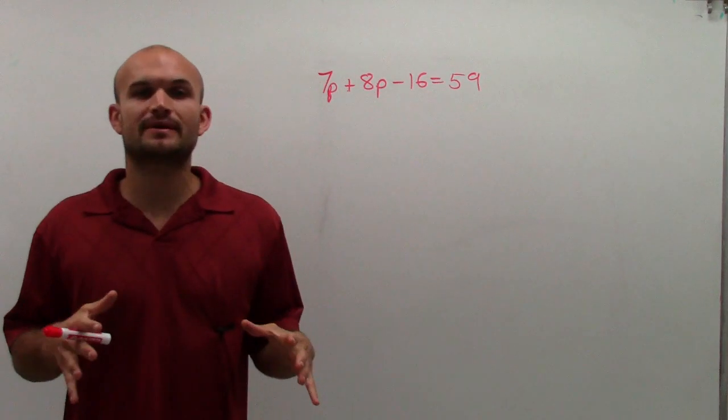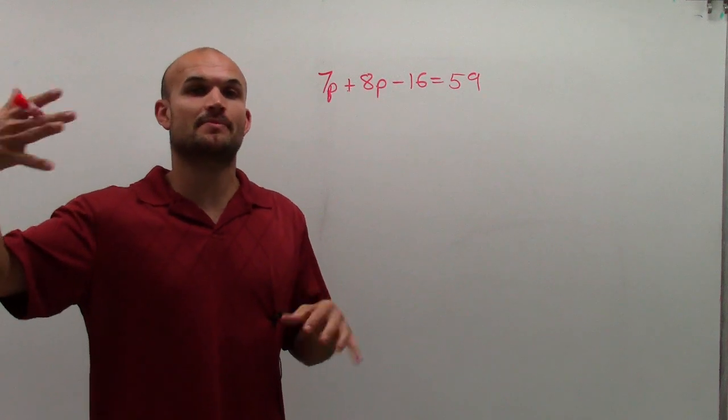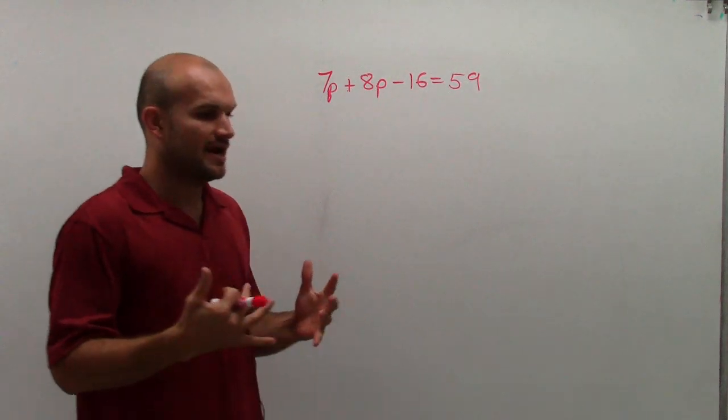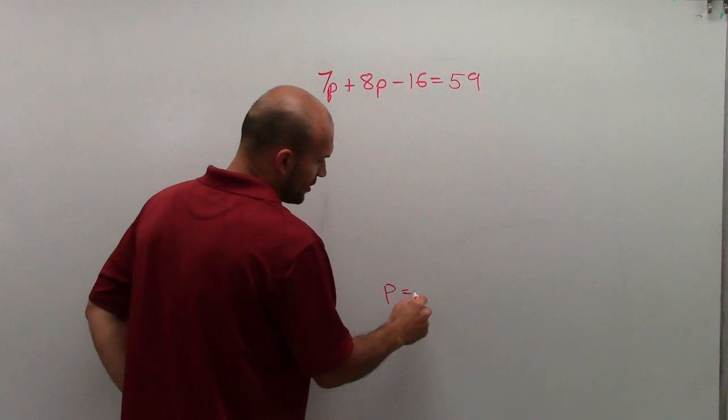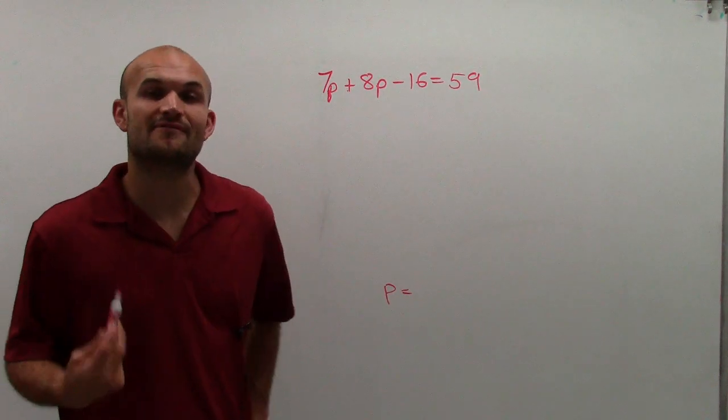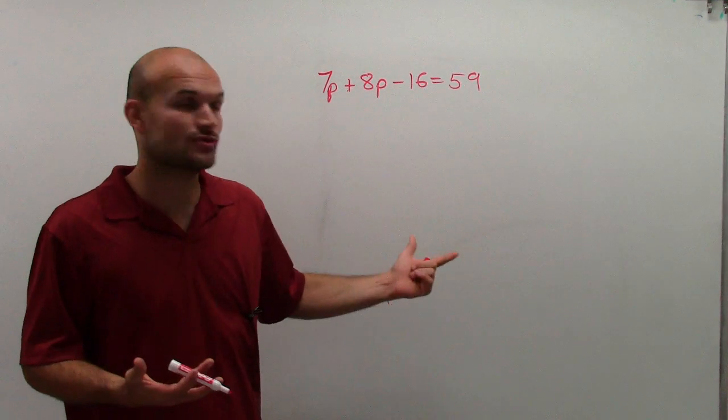Just remember, when dealing with multi-step equations, we started with one-step, then two-step, now we're on multi-step. The whole purpose is to get a variable isolated so we can find its value. We need to find the value that makes the equation true.